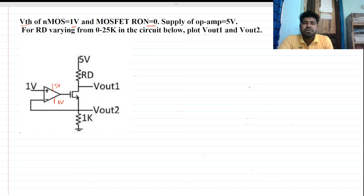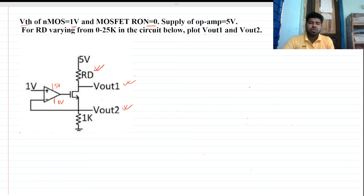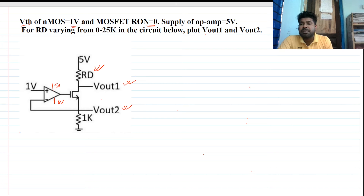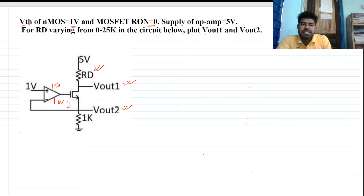We have to draw the waveforms of Vout1 and Vout2, varying the value of Rd. The approach to solve this question: whenever there is an op-amp with a feedback configuration, we should first find whether there is any negative feedback present or not.